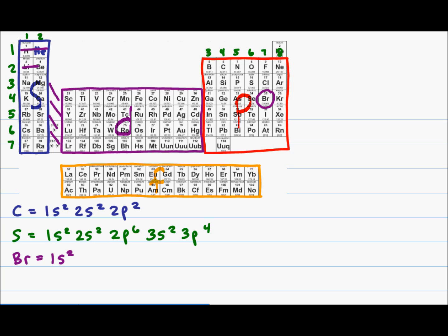In principal energy level number two we have two electrons in the s block and six electrons in the p block, giving me 2s2 and 2p6.